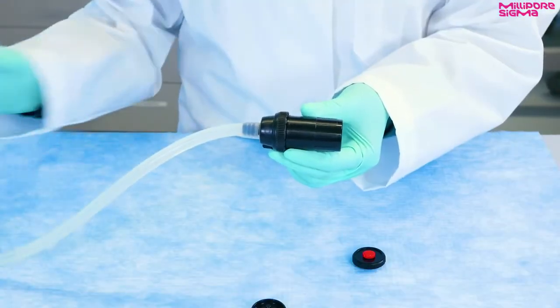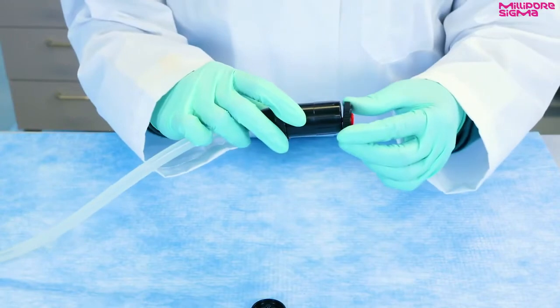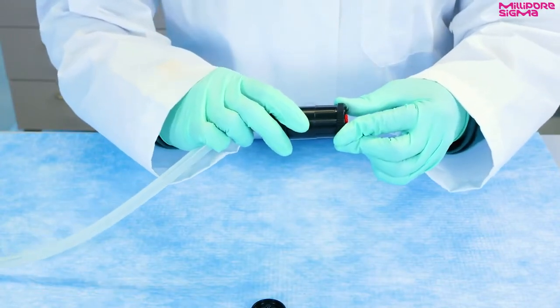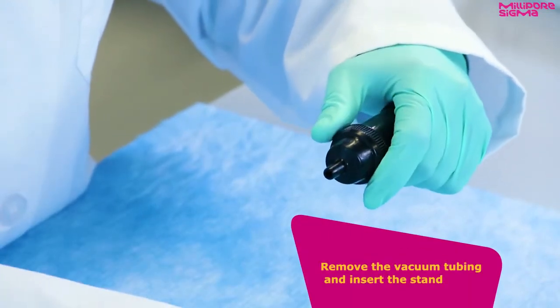Once the sampling is complete, turn off the pump and replace the inlet cover to protect the filter. Remove the vacuum tubing and insert the stand. Label the monitors and send to your lab for analysis.